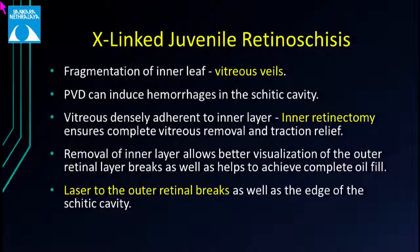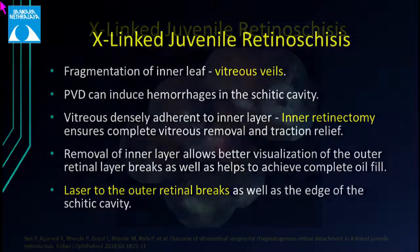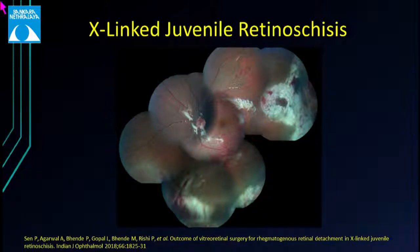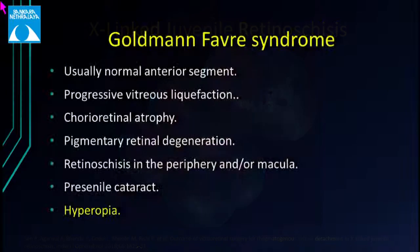The goal of surgery in retinal detachment of X-linked retinoschisis is to achieve choreoretinal adhesions of the outer breaks, followed by laser to the outer retinal breaks as well as to the edges of the schisis cavity. This intraoperative photograph shows laser applied to the outer breaks and laser marks at the edges of the schisis cavity.